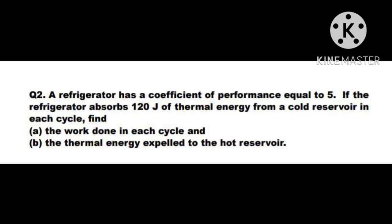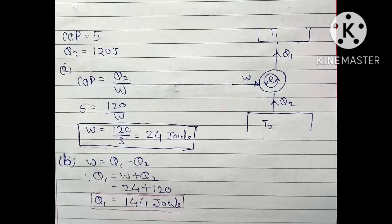Question number 2: A refrigerator has a coefficient of performance equal to 5. If the refrigerator absorbs 120 Joule of thermal energy from a cold reservoir in each cycle (Q2 = 120 J), find the work done in each cycle and the thermal energy expelled to the hot reservoir. Using COP = Q2 / W, we get 5 = 120 / W, so W = 24 Joule.